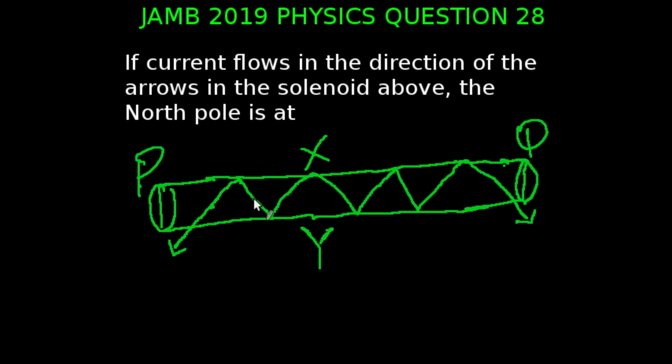Question 28 of the JAMB 2019 physics exams. If current flows in the direction of the arrows in the solenoid as shown in this diagram, the north pole is at... The arrow lines could be said to be magnetic field lines, and magnetic field lines obey the rule of north-south movement. So they actually begin at the north pole and end at the south pole. So our north pole here could be located at the P axis over here.